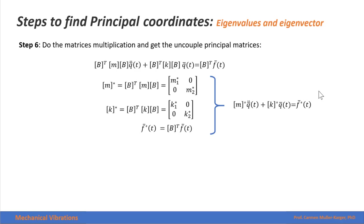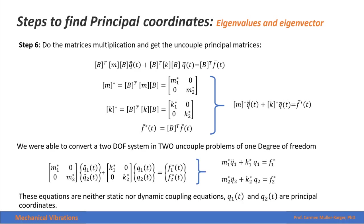We can now rewrite our equation of motion with the decoupled system — the diagonal matrices — in terms of our principal coordinates. We also have to find a new force vector, which is also pre-multiplied by the transpose of the modal matrix. With this change of variable, we were able to convert a two degrees of freedom system into uncoupled one degree of freedom systems. We then have two equations that we can solve independently, and these equations are neither statically nor dynamically coupled since they are expressed in terms of the principal coordinates.